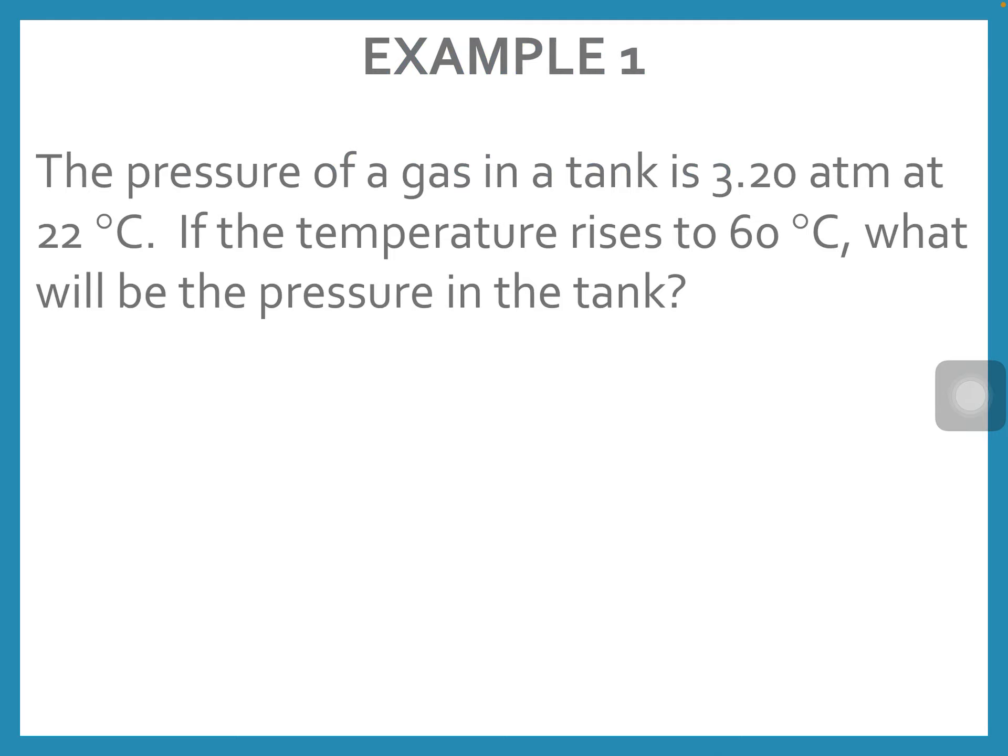So if the pressure of the gas in a tank is 3.2 atmospheres at 22 degrees Celsius, and then there is an increase or a rise of 60 degrees Celsius, what will be the final pressure in the tank at that point? So to start with, our initial pressure is 3.2 atmospheres. Our initial temperature is 22 degrees Celsius, plus 273 is 295 Kelvin.